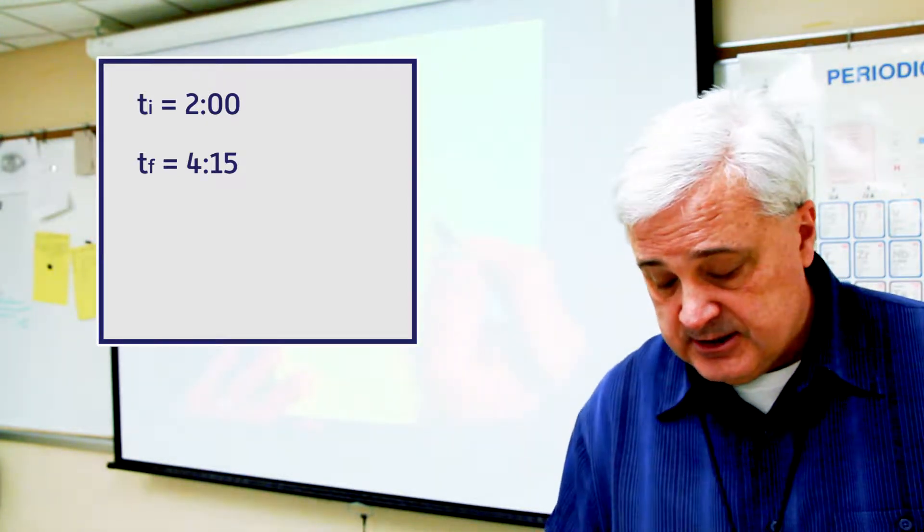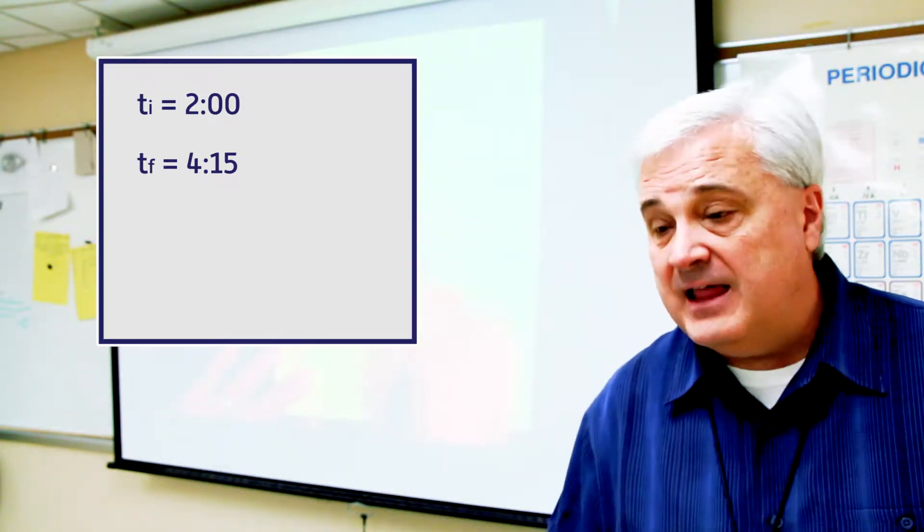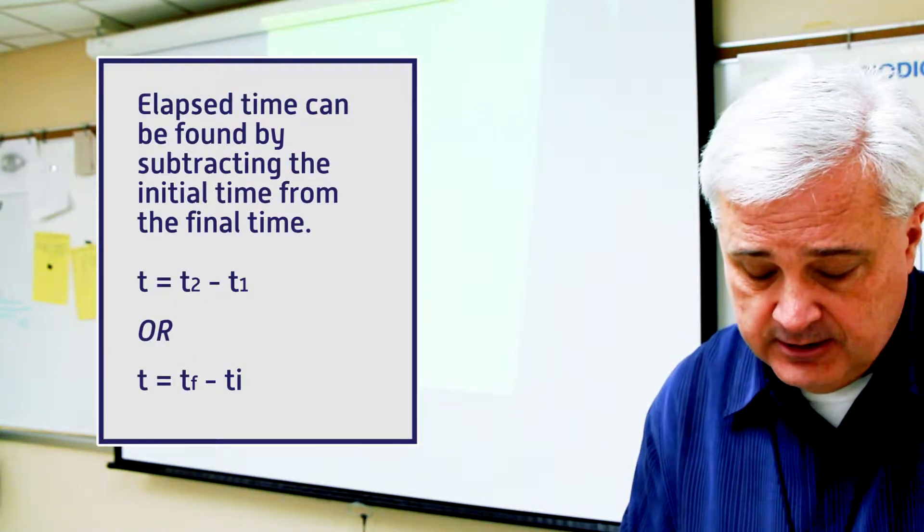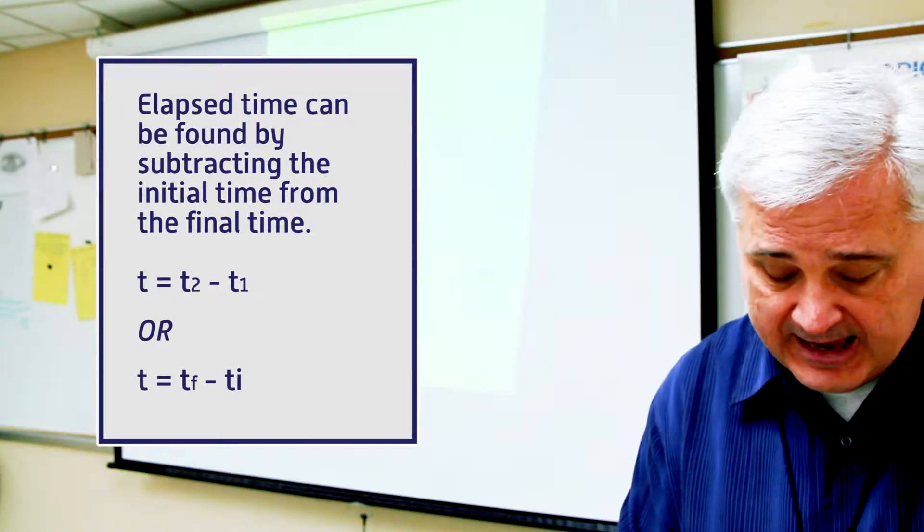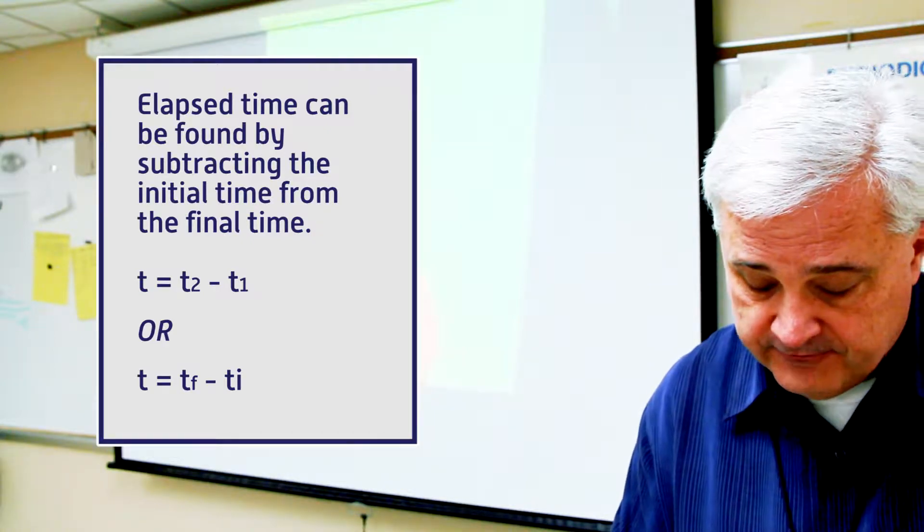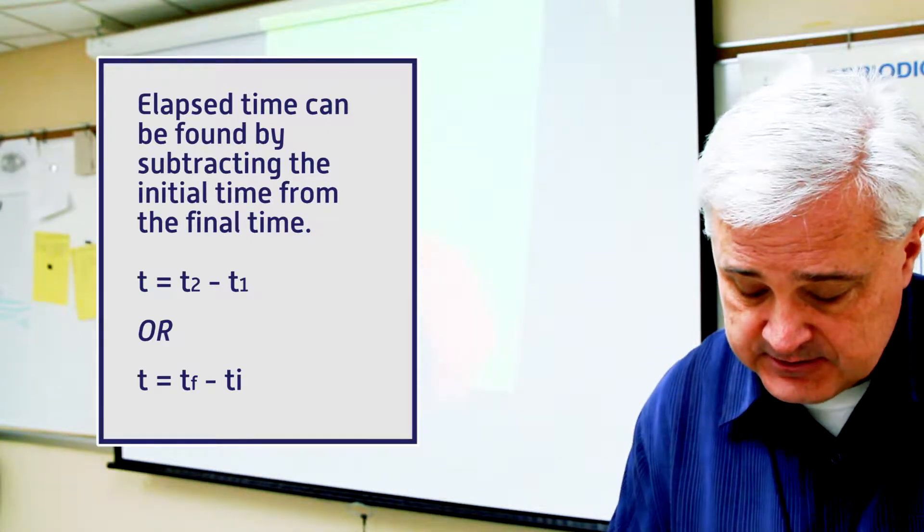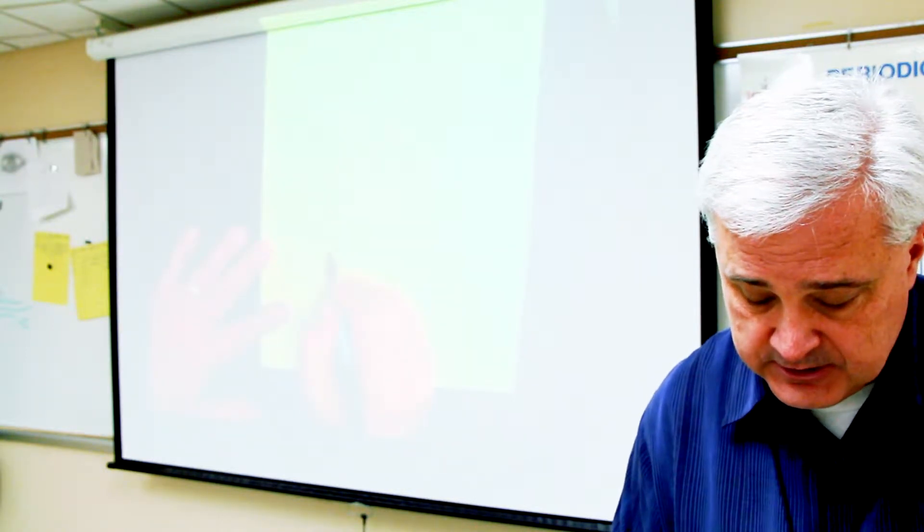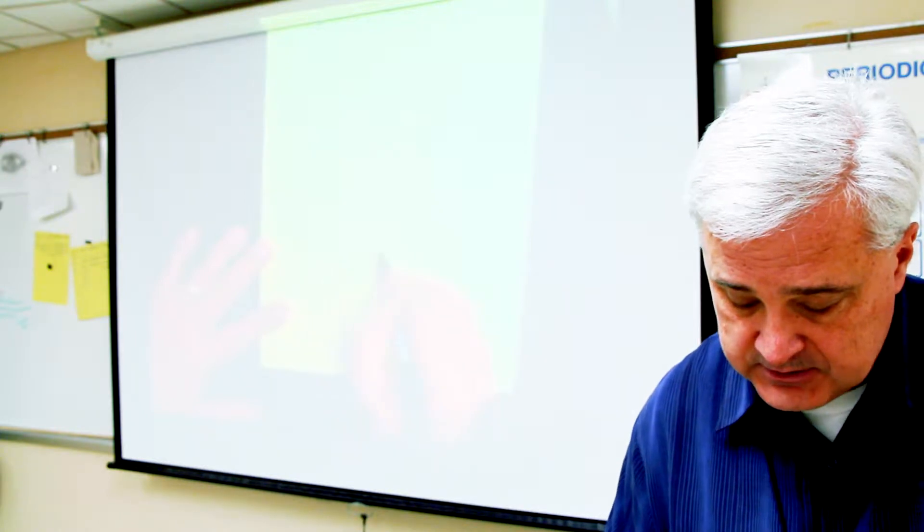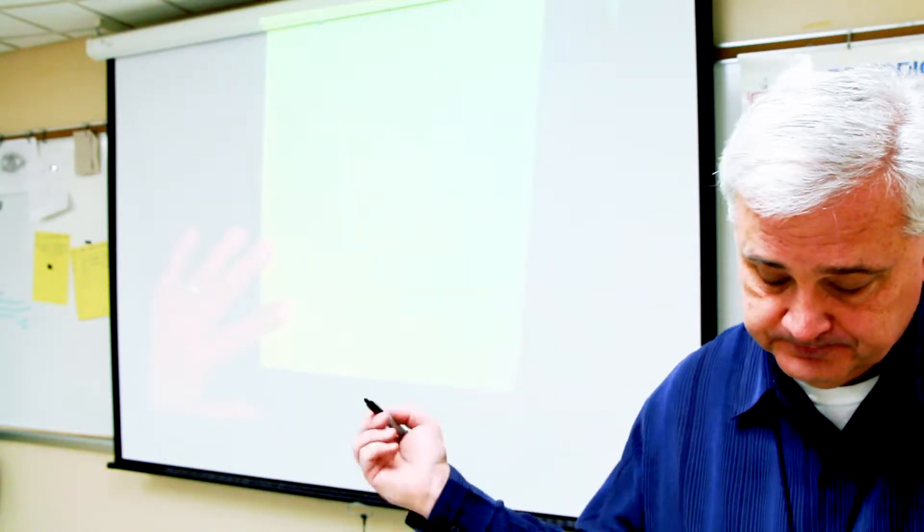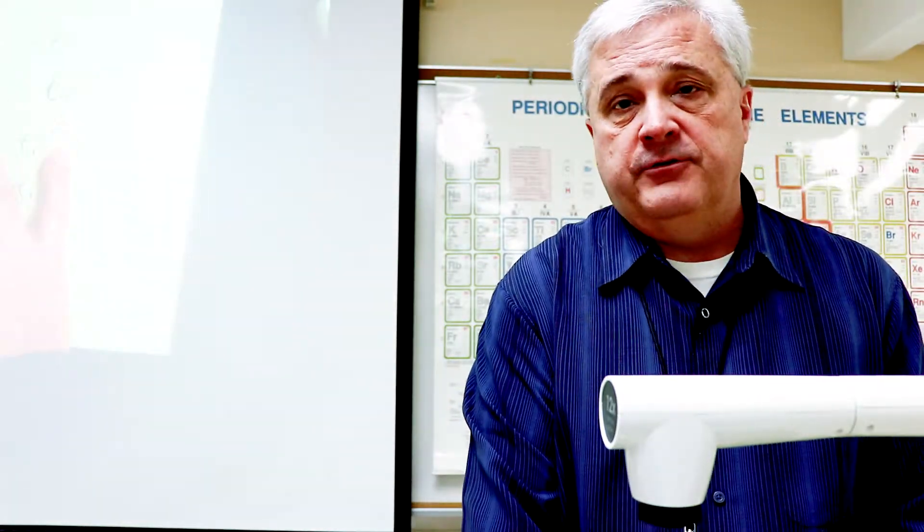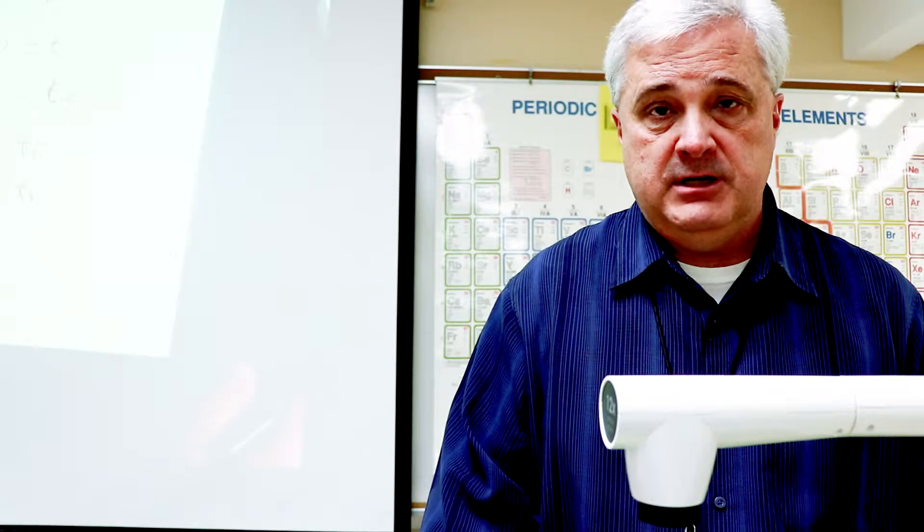So that's an f and that's a t. The elapsed time becomes the difference between the two times. So t, you can say t total, t elapsed, or just t equals the final time minus the initial time. Another way to write that is to say t equals t sub 2 minus t sub 1. Now, not hard. If you start at 2 o'clock and go to 4:15, 2 hours and 15 minutes. Easy enough.